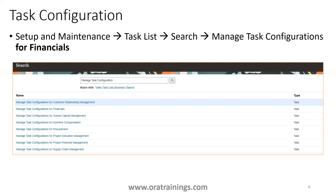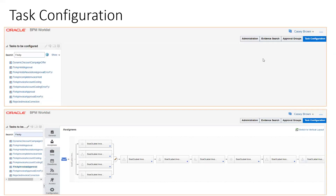Coming to task configuration: this is the actual business process used for managing approval of your invoice. Search for 'Manage Task Configuration for Financials' in Setup and Maintenance, which navigates to the BPM Worklist page. The worklist page has four buttons; the earlier one was Approval Groups and the next is Task Configuration. In Task Configuration, search for 'Fin AP' — this gives you the list of tasks starting with Fin AP. Click on 'Fin AP Invoice Approval', click Edit, and you can see the process. In this session we just want to view it and run it; in the next session we'll discuss adding new rules. To add anything, click the Edit icon and you can change business rules.